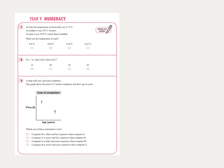The first question: at 6 a.m. the temperature in Greenville was 11.9 degrees Celsius. At midday — that is 12 noon — it was 9.8 degrees warmer, meaning it increased by 9.8. Then at 6 p.m. it was cooler — we take away 10.9 degrees Celsius. What was the temperature at 6 p.m.?